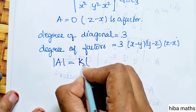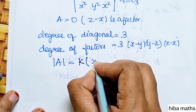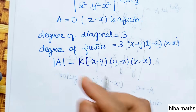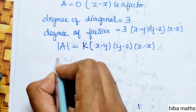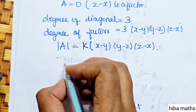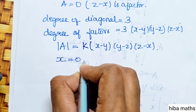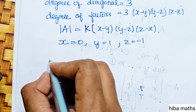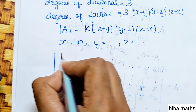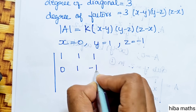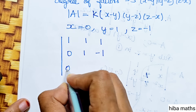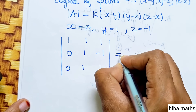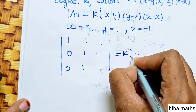The degree of the leading diagonal is 2 plus 1 equals 3. The degree of the factors x minus y, y minus z, z minus x is also 3. So A equals k into x minus y, y minus z, z minus x. To find the constant k, substitute x equal to 0, y equal to 1, z equal to minus 1. The matrix becomes: 1,1,1; 0,1,minus 1; 0, 1 squared equals 1, minus 1 squared equals 1.